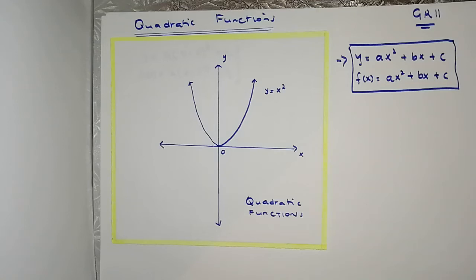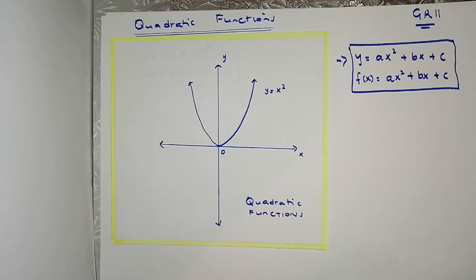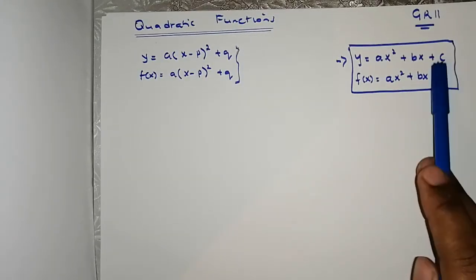Hello everyone, welcome back to Academy Coordinates. In this video we're looking at mathematics specifically for grade 11s — however if you're in grade 12, do feel free to join us. Grab your pen and paper and let's do this together. We are looking at quadratic functions today, also called parabolas or parabolic functions. We introduce the horizontal shift of the parabolic graph, and y = ax² + bx + c is the standard equation of the parabola.